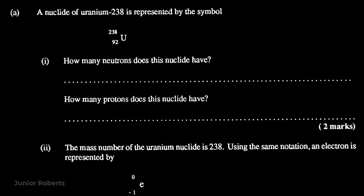A nuclide of uranium-238 is represented by the symbol shown. We need to find how many neutrons this nuclide has. From our nuclide representation, we represent a nuclide by the symbol X, where A is the mass number at the top and Z is the atomic number at the bottom. There is a relationship between the mass number and the number of nucleons inside the nucleus: A = Z + N, where A is the mass number, Z is the atomic number, and N is the number of neutrons.